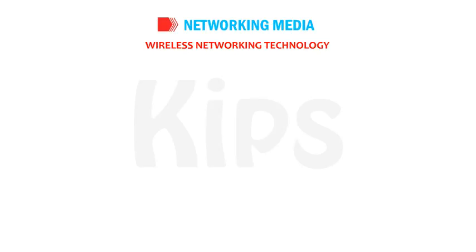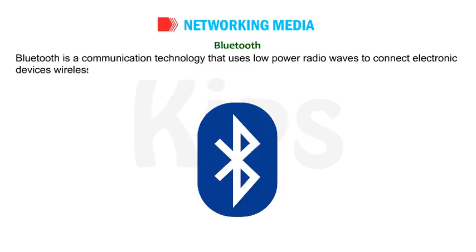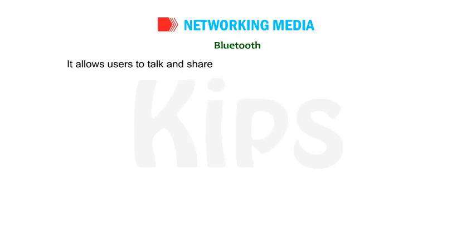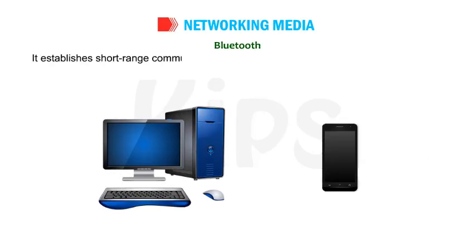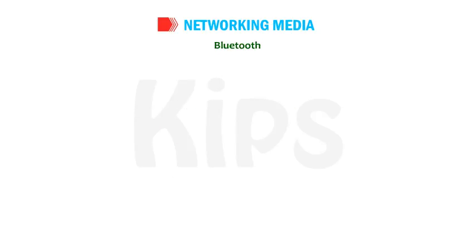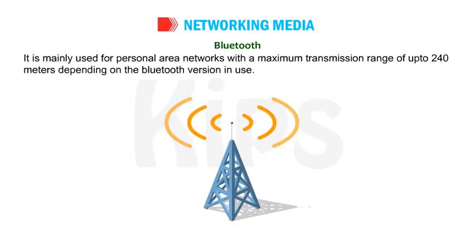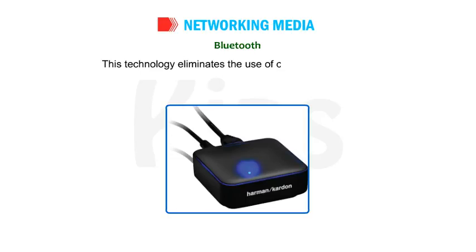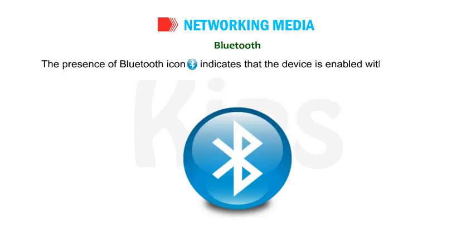Wireless Networking Technology — Bluetooth: Bluetooth is a communication technology that uses low power radio waves to connect electronic devices wirelessly. It allows users to talk and share information like voice, music and videos. It establishes short-range communication between phones, computers and other network devices. It is mainly used for personal area networks with a maximum transmission range of up to 240 meters, depending on the Bluetooth version. This technology eliminates the use of cables and adapters.